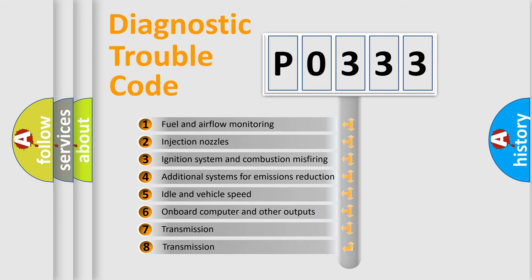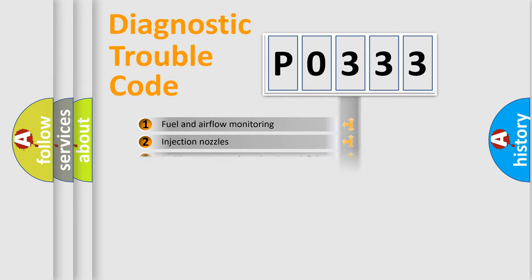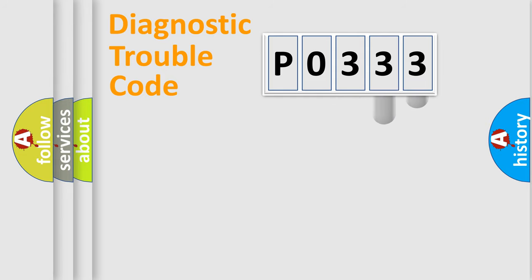The third character specifies a subset of errors. The distribution shown is valid only for the standardized DTC code. Only the last two characters define the specific fault of the group.